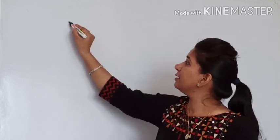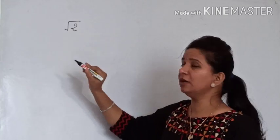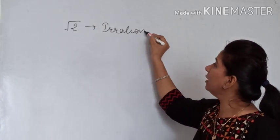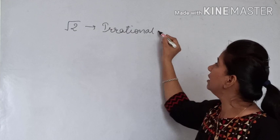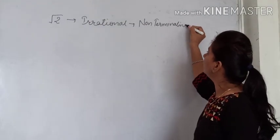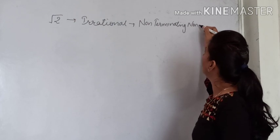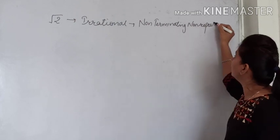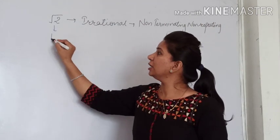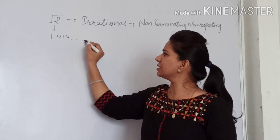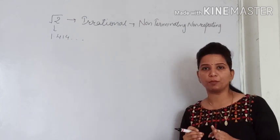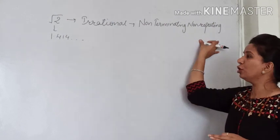So first let's take root 2. This is an irrational number, you all know that. Irrational number means non-terminating and non-repeating decimal expansion. So root 2 value is 1.4, 1.41, 1.414... it will not stop and will not repeat — like this non-repeating curve.